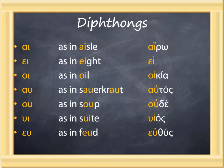And lastly, epsilon-upsilon is pronounced as the eu in feud. Since diphthongs are a bit challenging, I'm going to pause the presentation at this point so that you can practice each one several times. When you're ready to go on, just click the advance arrow at the bottom.